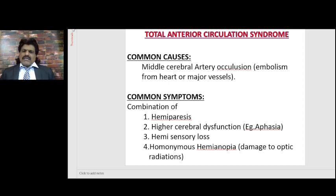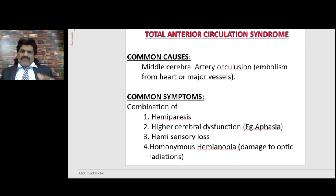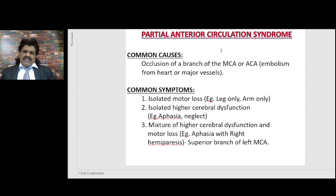There will be homonymous hemianopia because of damage to the optic radiations. If the parietal lobe gets affected, there would be inferior quadrant anopia. If the temporal radiations get affected, they would have superior quadrant anopia. So homonymous hemianopia results from damage to the radiations.